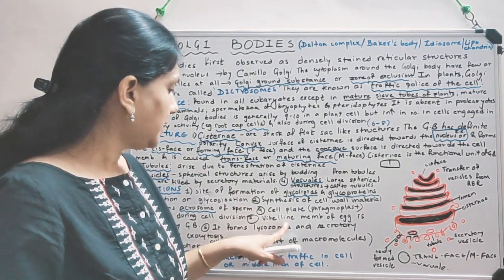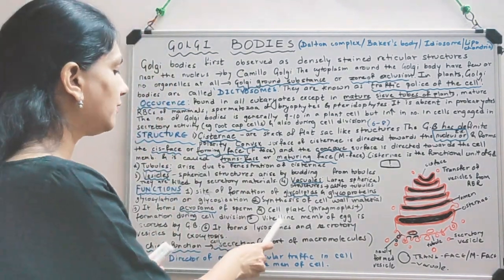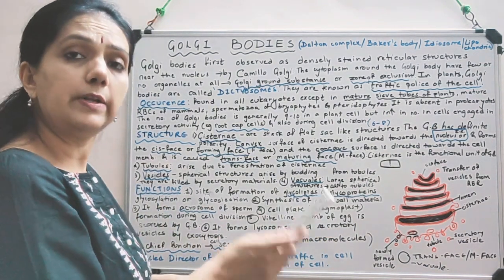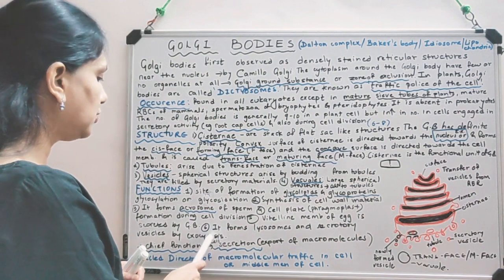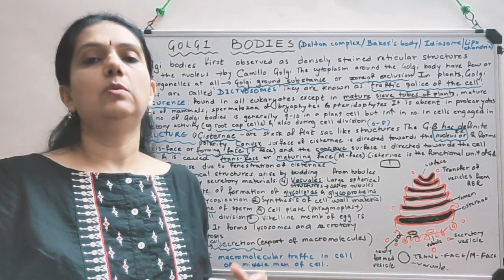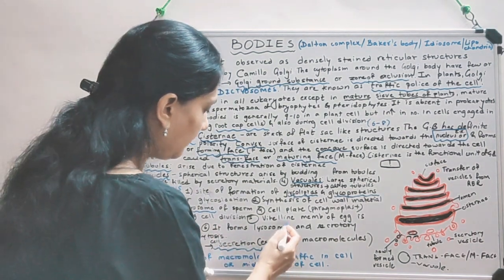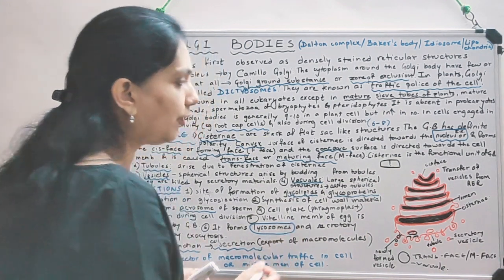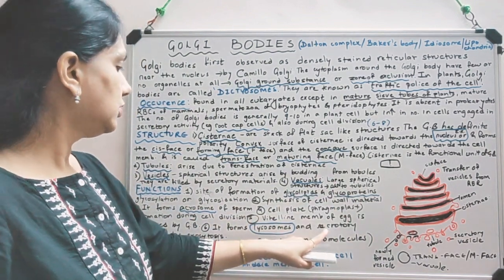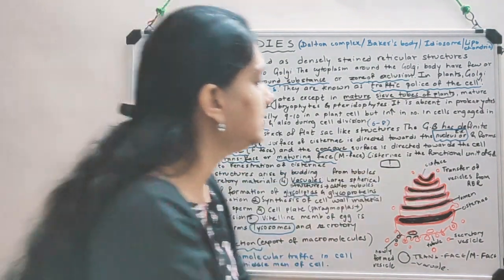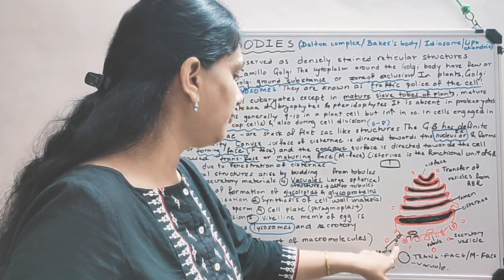It also forms the vitelline membrane of the egg - the vitelline membrane means the outermost membrane of an egg. It also forms lysosomes and secretory vesicles by exocytosis. Endoplasmic reticulum and Golgi body together are responsible for the formation of lysosomes - it is teamwork of ER and Golgi body. Vesicles are entering at the cis phase and leaving at the trans phase as newly formed, pinching-off vesicles.